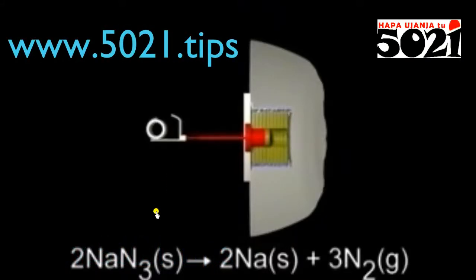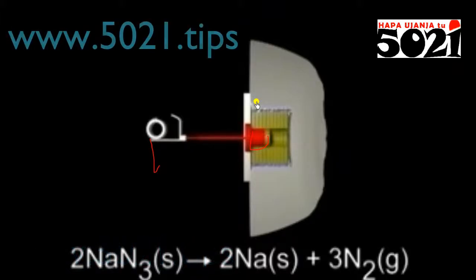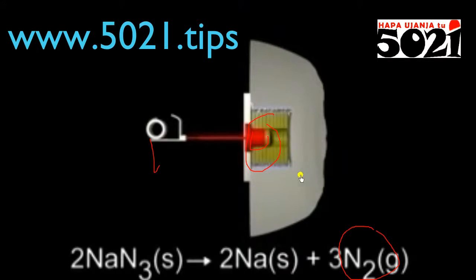This chemical process inside the inflator might be confusing, but just know there is a chemical reaction that happens inside which gives off nitrogen gas. That nitrogen gas is what inflates the airbag.